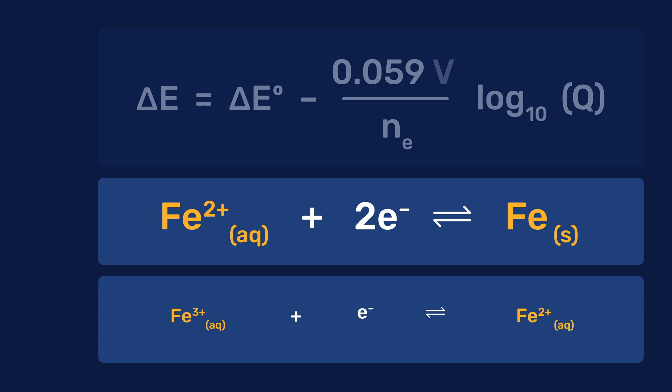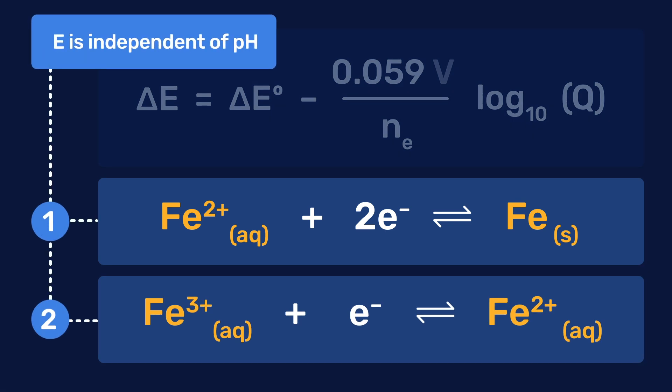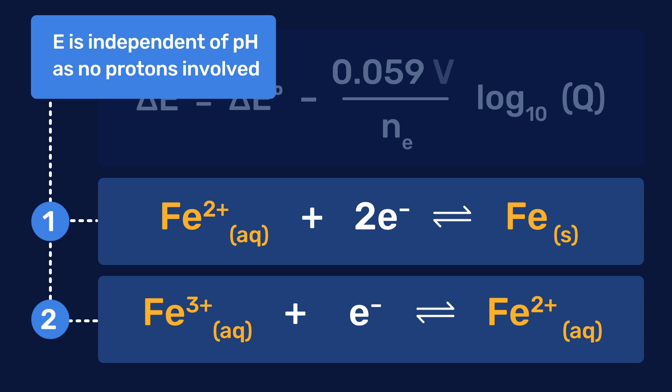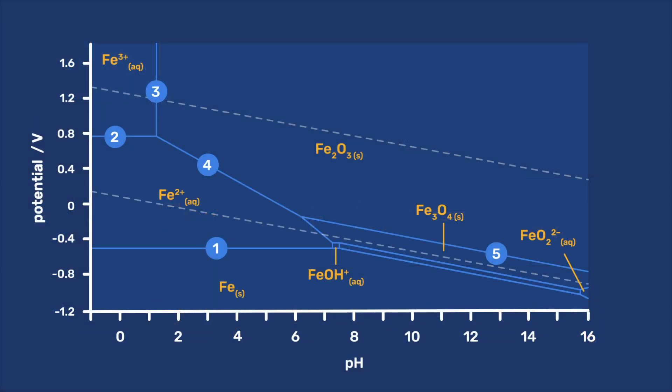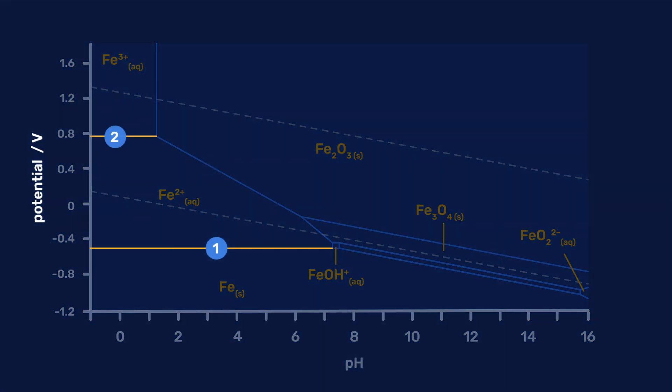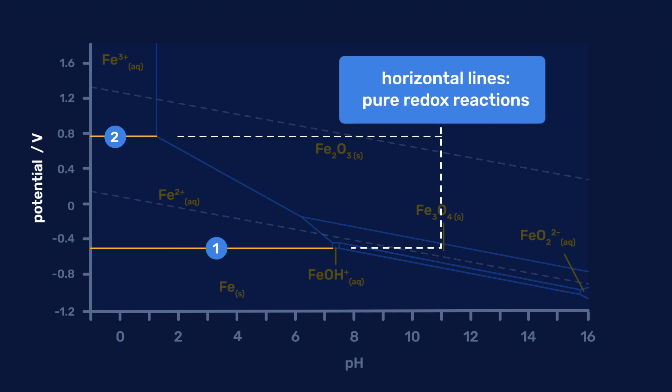The potential of these lines can be expressed from the Nernst equation. In both cases, we find that the potential is independent of the pH, as no protons are involved in these reactions. Therefore, lines 1 and 2 in this diagram are horizontal.